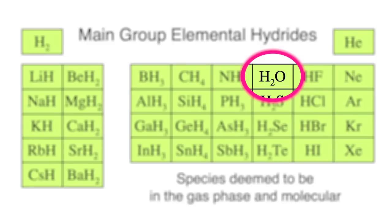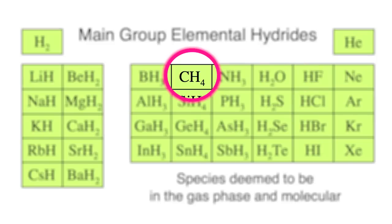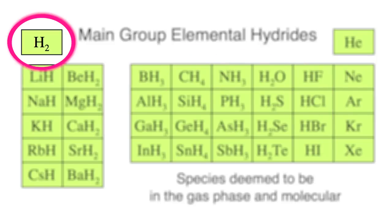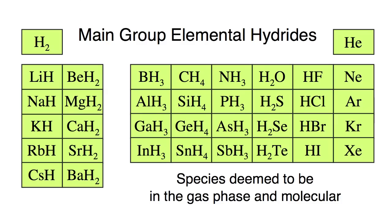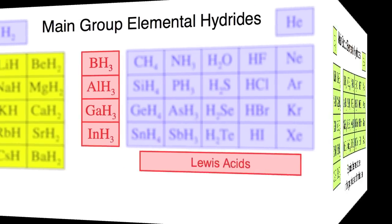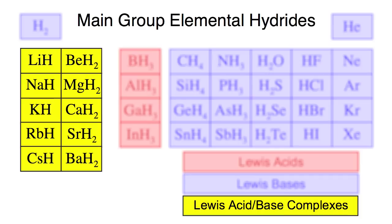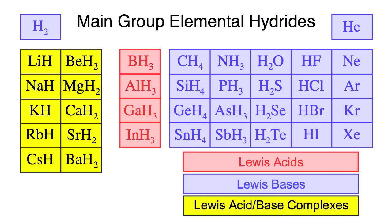The main group elemental hydrides are common species such as water, ammonia, methane, hydrogen chloride and hydrogen. We can see these present as Lewis acids, Lewis bases and Lewis acid-base complexes.